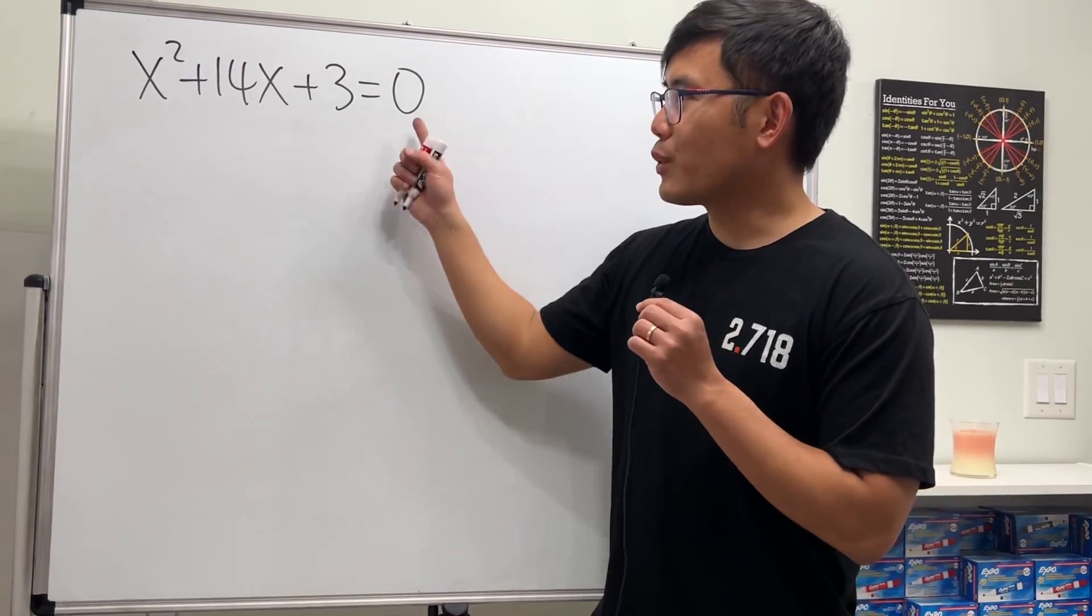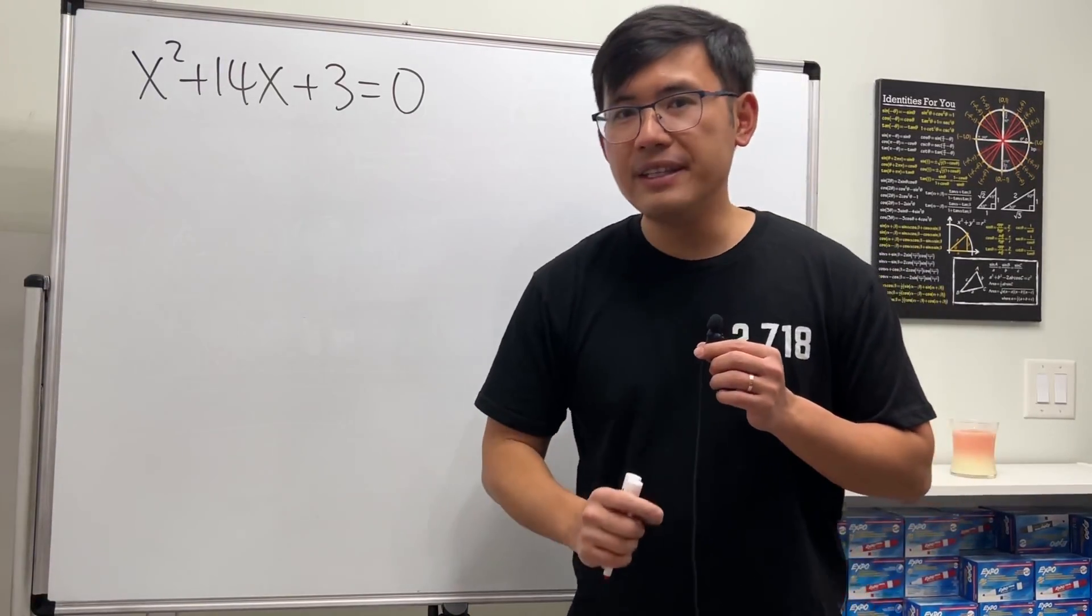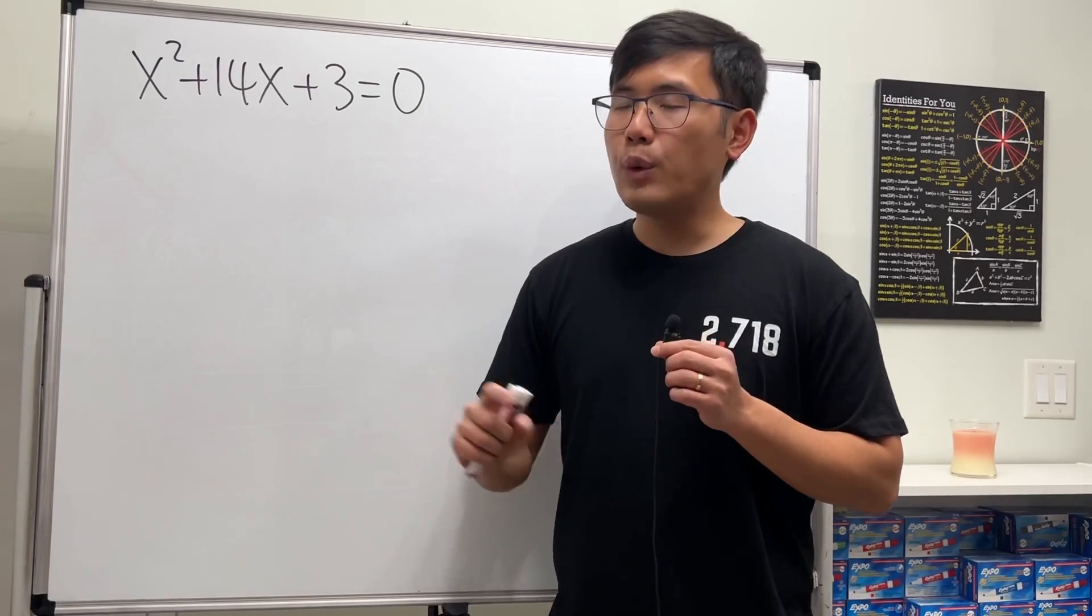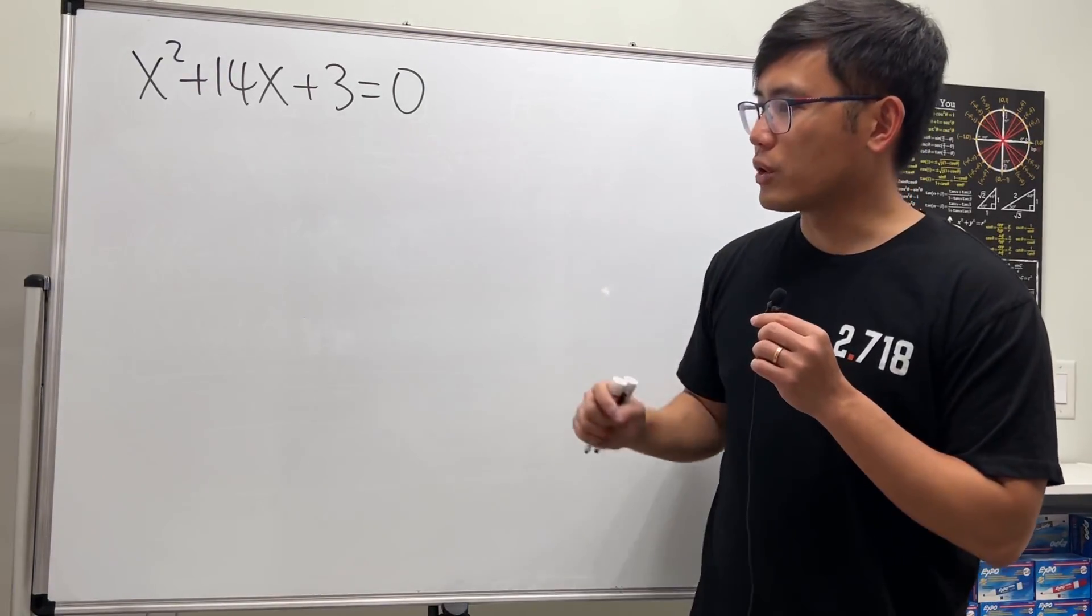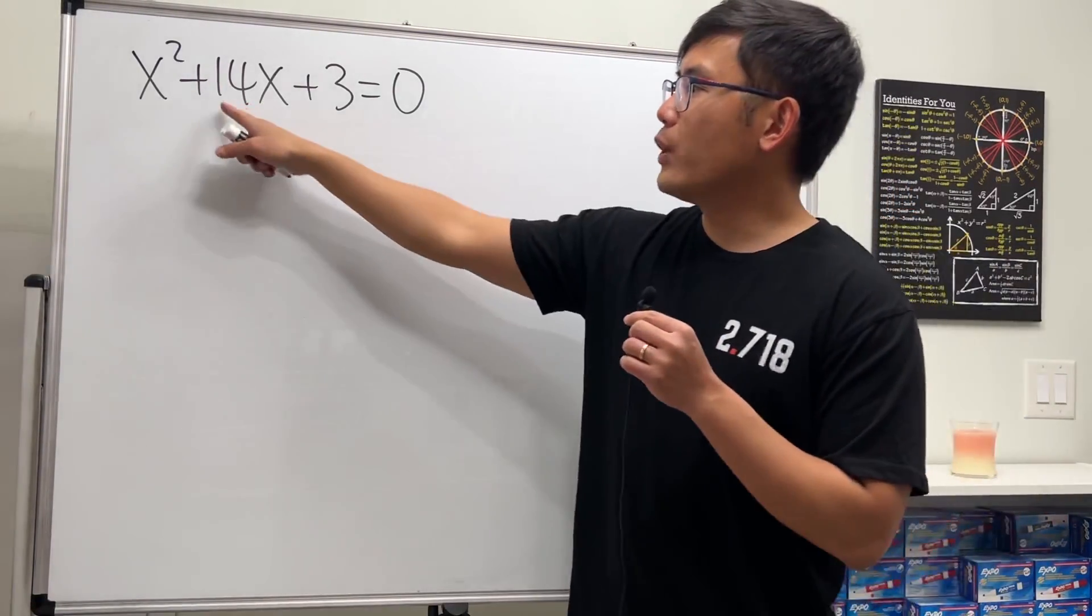We're going to solve this quadratic equation by the completing the square method. The reason we're not using the quadratic formula is because the b value here is 14.